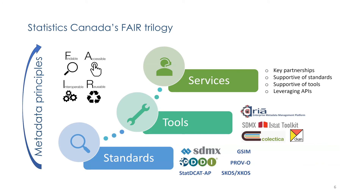Our metadata ecosystem is put together with three building blocks: standards, tools, and services. The metadata principles and FAIR are the main drivers. Standards span both structures and semantics. In terms of structures, DDI and SDMX support a number of data organizations. These will be linked to data sets via data catalog metadata using STAT-DCAT, an application profile of DCAT for data portals. With DDI, SDMX, and XCROS, we can also define domain-specific data models and vocabularies like standardized classifications and concept schemes.